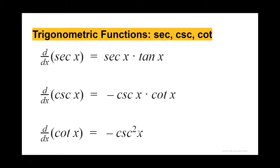We also have the trig functions for secant, cosecant, and cotangent. The derivative of secant x equals secant x times tangent x. The derivative of cosecant x equals negative cosecant x times cotangent x. And the derivative of cotangent x equals negative cosecant squared x. For cosecant x and cotangent x, you have a negative sign, so make sure you note that to avoid a sign error.